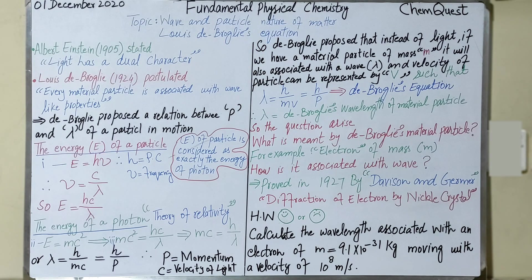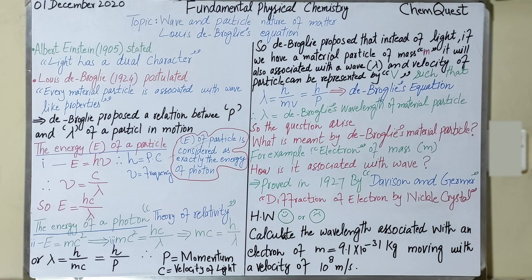In 1905, Albert Einstein proposed that light has a dual character — it means that light can sometimes behave as a particle and sometimes it can behave in the form of waves. In previous lectures, we discussed different phenomena in which light proved that it travels in the form of waves, and similarly we discussed phenomena in which light proved that it behaves like particles.